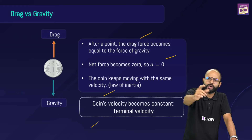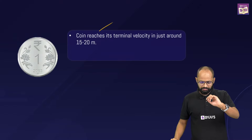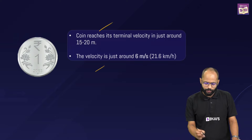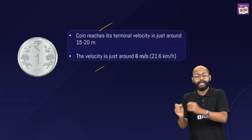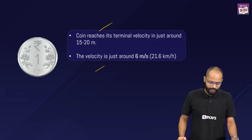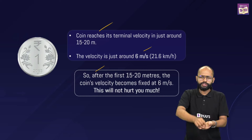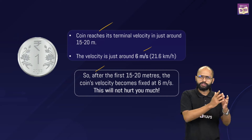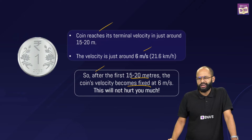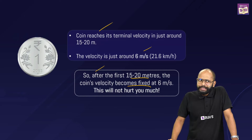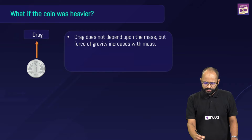The coin reaches its terminal velocity in just around 15 to 20 meters, and that velocity is only about 6 meters per second — not 127 meters per second as we calculated, because we were missing the drag force. Wind is also a factor; the coin may not fall straight down. After the first 15 to 20 meters, the coin's velocity fixes at 6 m/s, which will not be lethal.